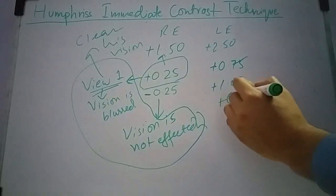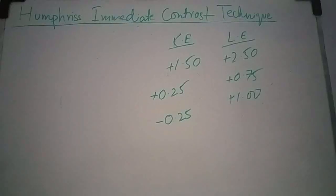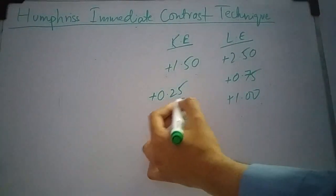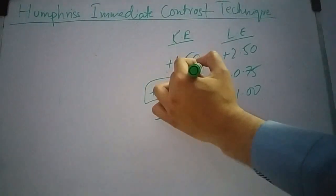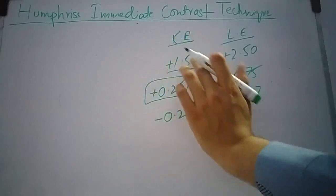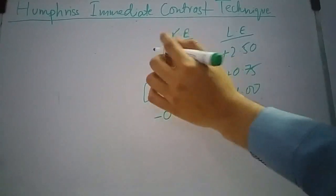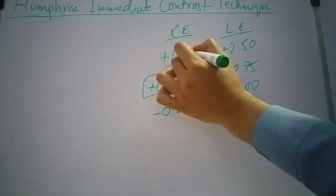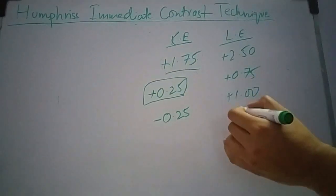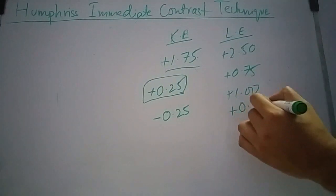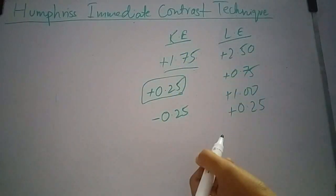This maintains the initial fogging difference. If the patient appreciates plus 0.25, I will increase the trial frame prescription to plus 1.75 and also increase the fogging by plus 0.25 so that the difference between the two eyes is maintained.